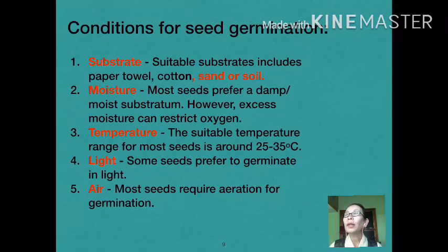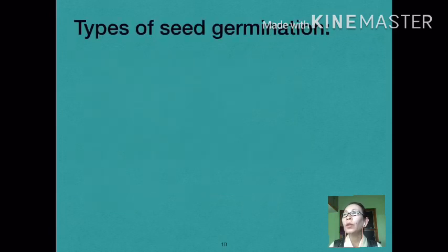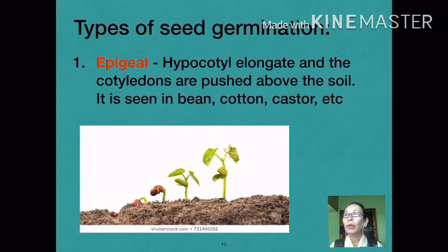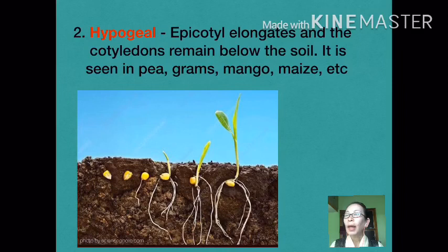Under proper conditions, the seed begins to germinate. Depending on how the shoot emerges, seed germination can be of three types: epigeal, hypogeal, and viviparous. In epigeal germination, the hypocotyl elongates and the cotyledons are pushed above the ground. Plants such as beans, tamarind, papaya, and castor germinate in this way. In hypogeal germination, the epicotyl elongates and the cotyledons stay underground. Plants like peas, gram, mango, and maize are examples of this type.